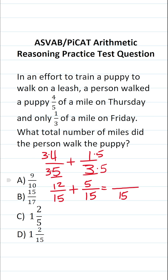Our denominator is not going to change. 12 plus five is 17, giving us 17 over 15. This isn't an answer choice because this is what's called an improper fraction, so we're going to convert this improper fraction back to a mixed number via some simple long division.